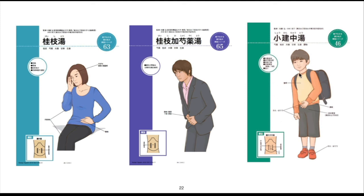In children's cases, they usually have pain when they need to do something they don't want to do. In that case, you prescribe xiao-jian-jong-tang. Children start to have pain when they try to go to school — especially on Monday.